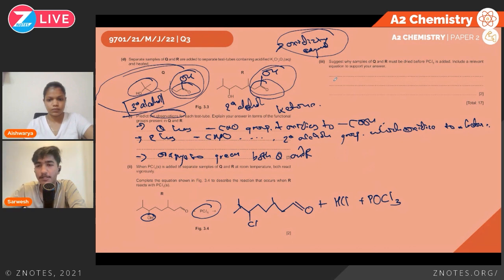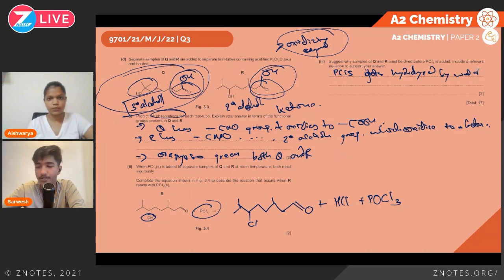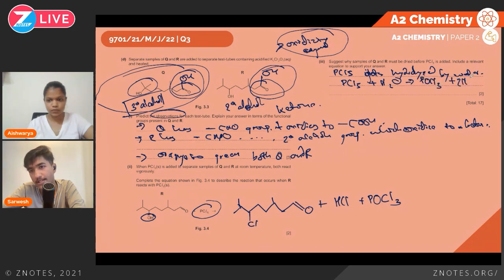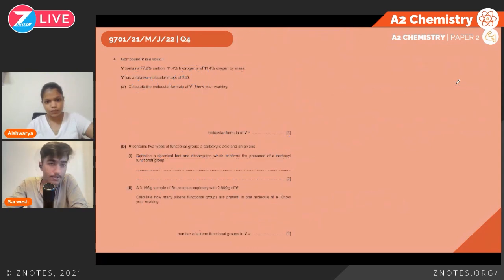Samples of Q and R must be dried before PCl5 is added because PCl5 is hydrolysed by water. The reaction is: PCl5 + H2O → POCl3 + 2HCl. If the sample contains water, the PCl5 reacts with water instead of the alcohol, so the chlorination of the sample would not take place.